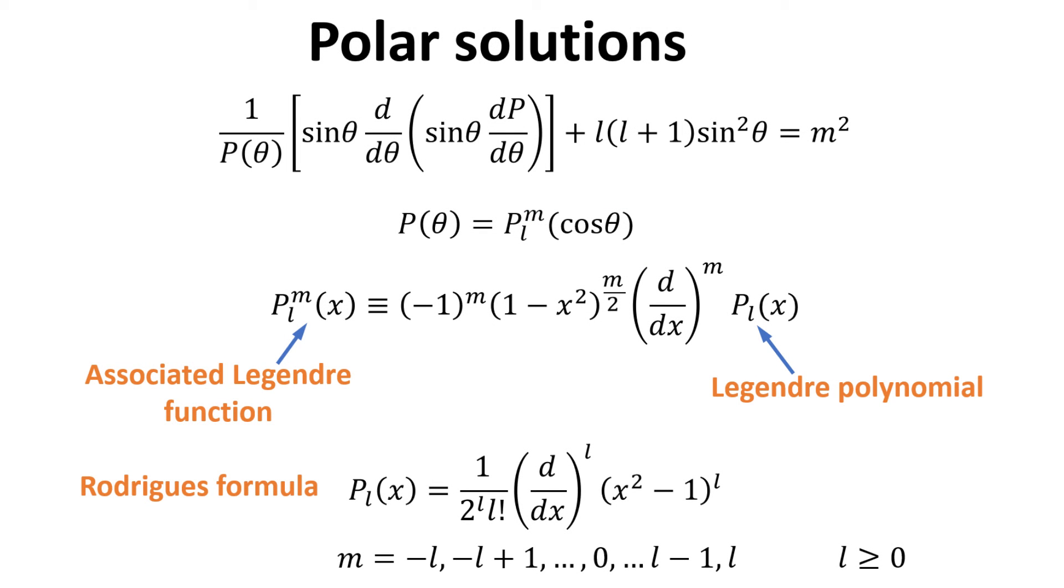The polar solutions, on the other hand, is more involved. We shall not attempt to mathematically derive it, but will simply just state the solution. The solution, p theta, is given by the associated Legendre function, which are polynomial functions defined here in terms of the Legendre polynomial according to the Rodriguez formula. For the Rodriguez formula to make any sense, l has to be integer and a non-negative number, and that m only runs from minus l to plus l. The associated Legendre function for a given m and l index can be easily found on Wikipedia.